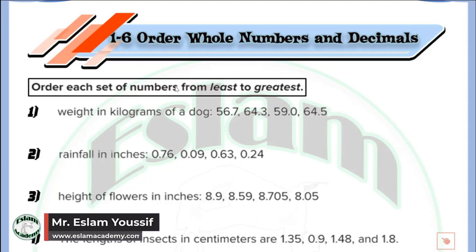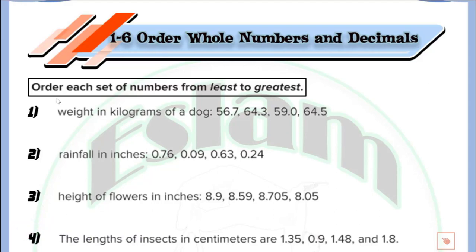In question number 1, we need to order each number from the least to the greatest. We have four numbers: 56.7, 64.3, 59.0, and 64.5. We need to compare between them. So first, put all of the decimals under each other.